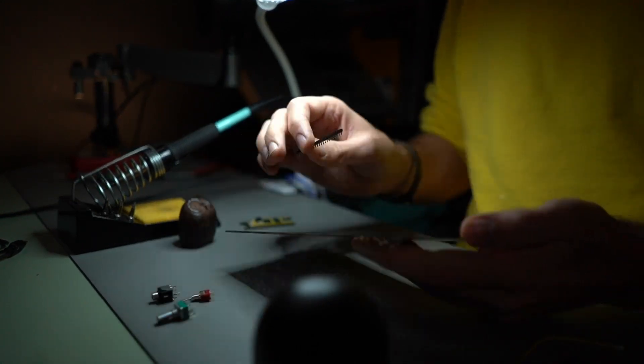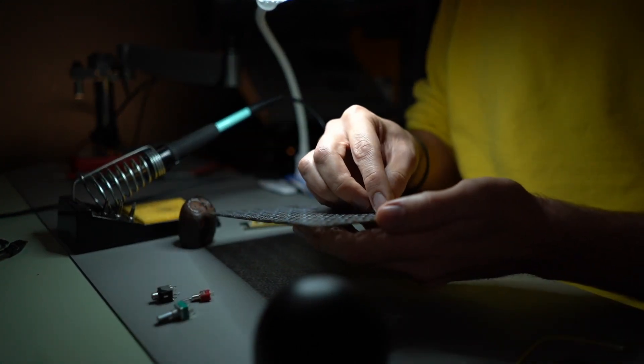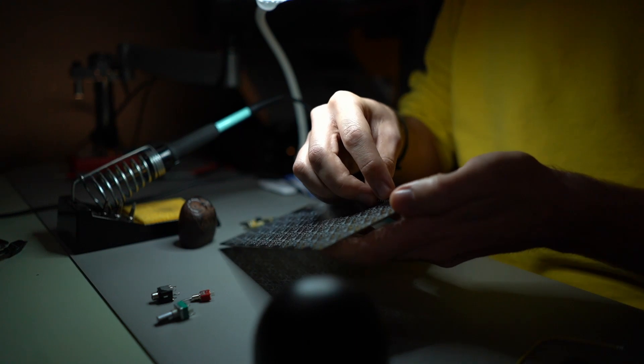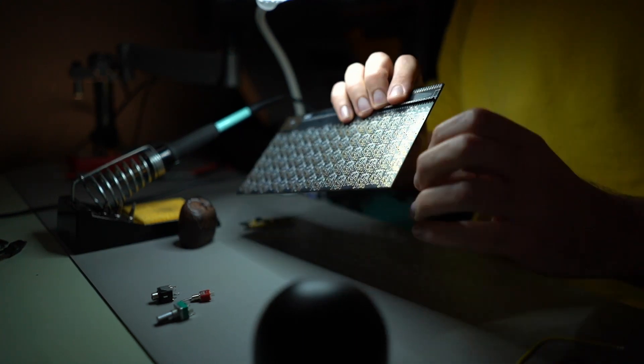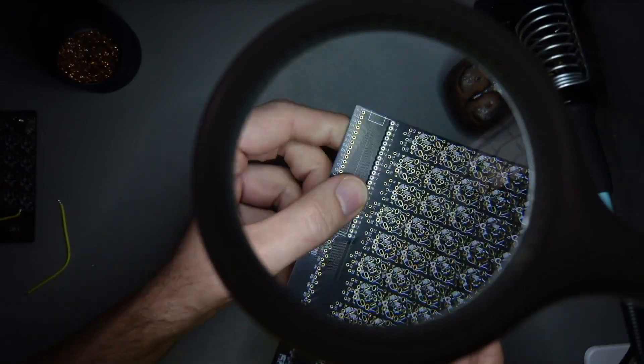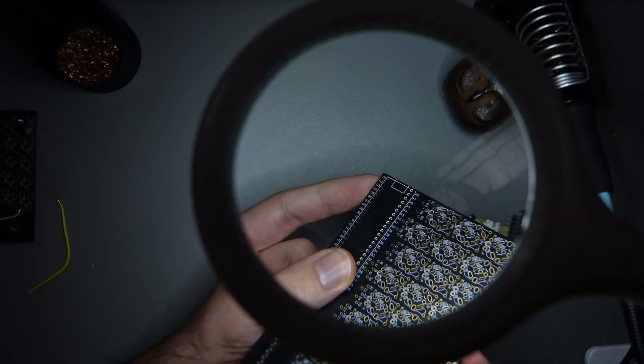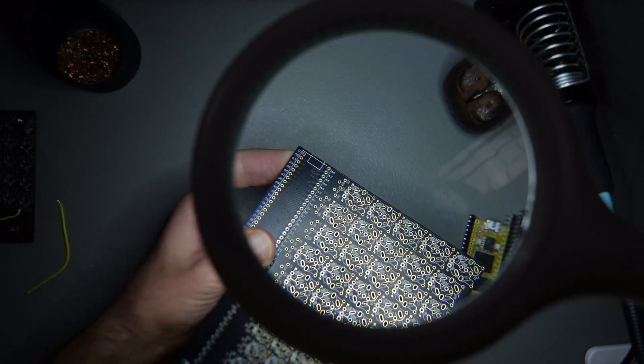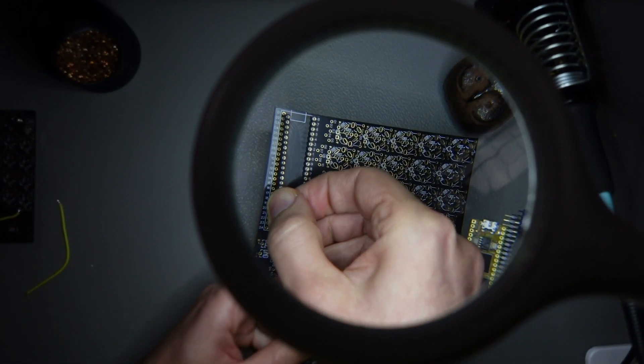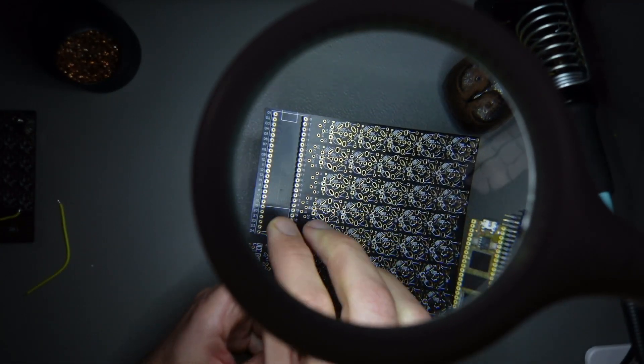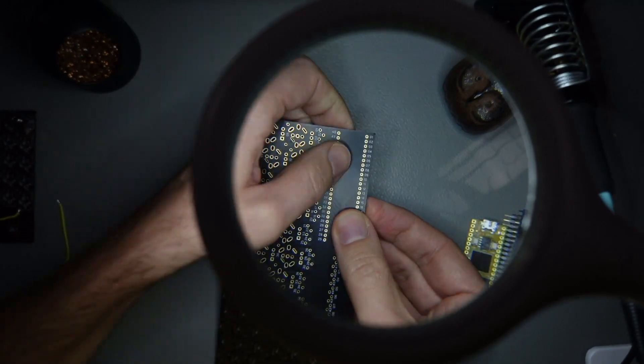The first thing to do when we want to connect the daisy seed into the simple board is to connect our female headers. These are the female headers. We have one strip here and another one here and these should be soldered on the other side.